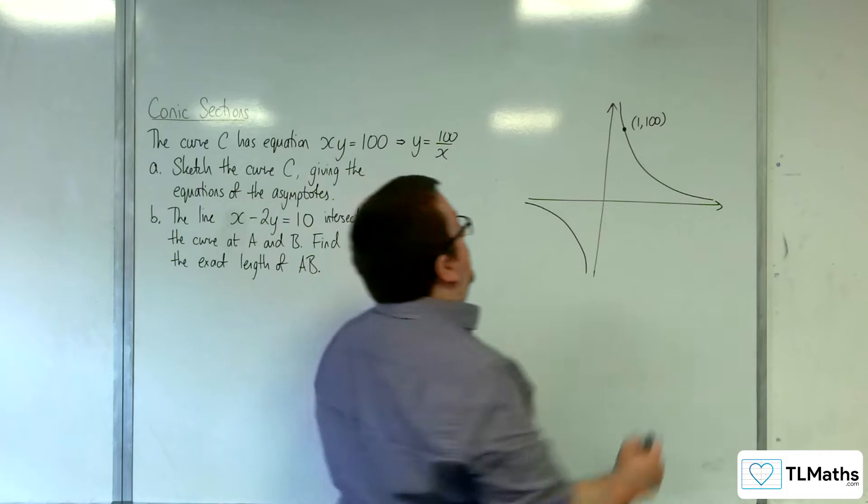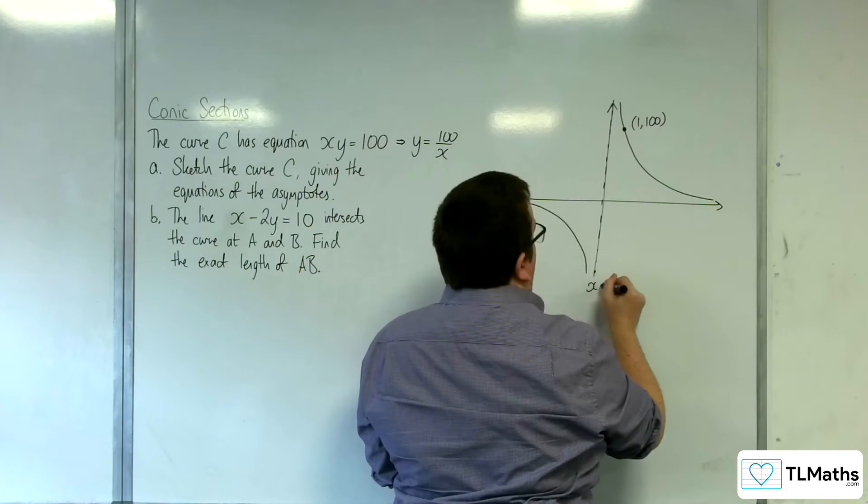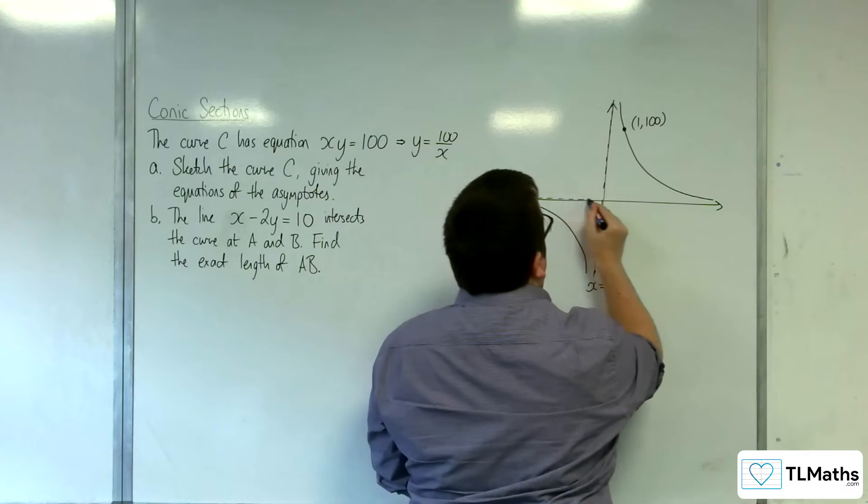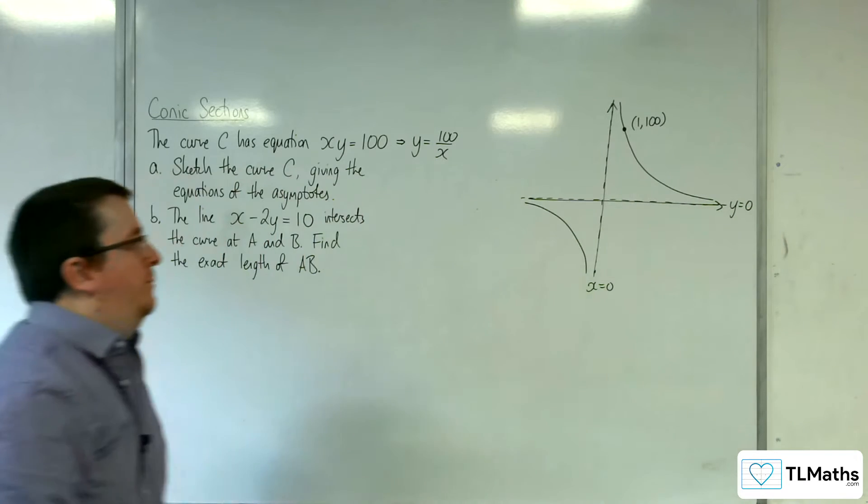The equations of the asymptotes: well, the asymptotes are just the coordinate axes, and so that would be x equals 0 and y equals 0. These are the asymptotes.